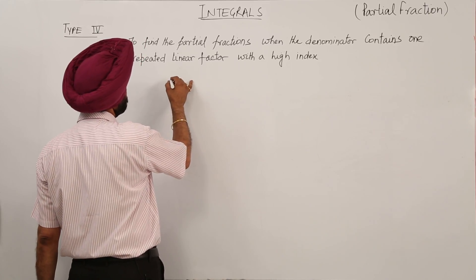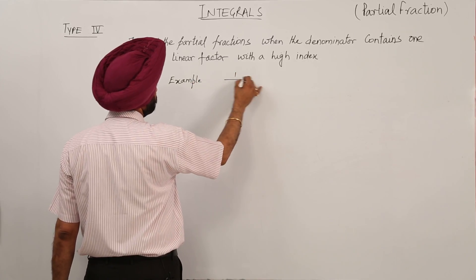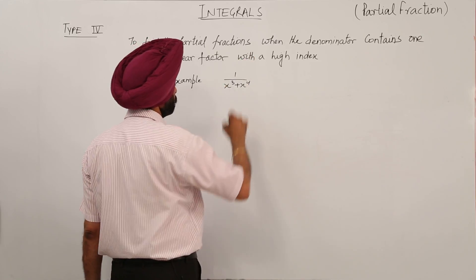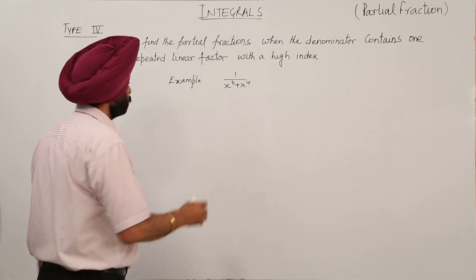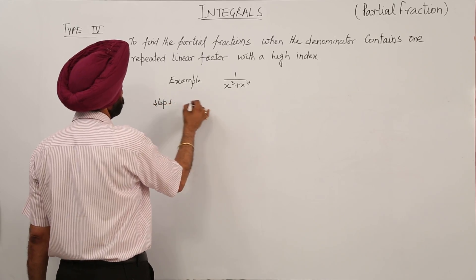Now for the example, suppose we are having x cube plus x to the fourth. What should be the first step? The first step should be to arrange.